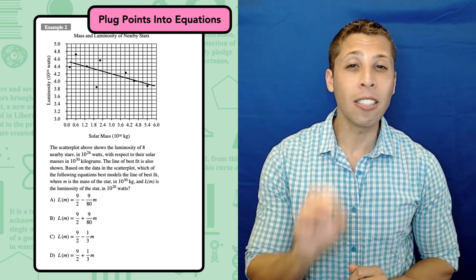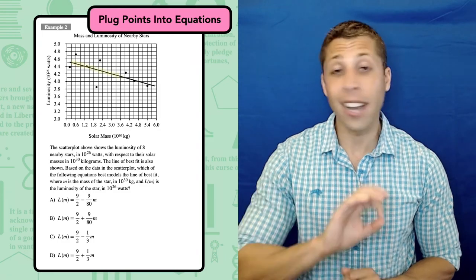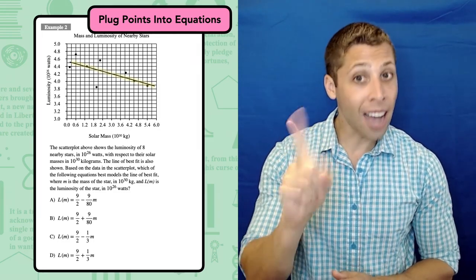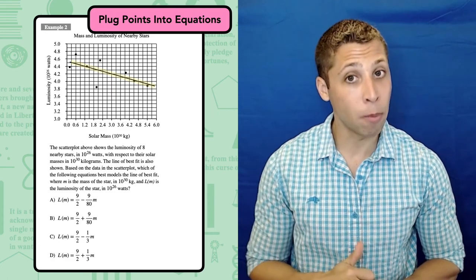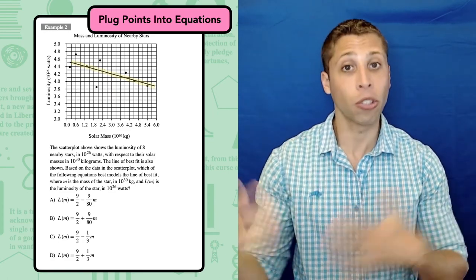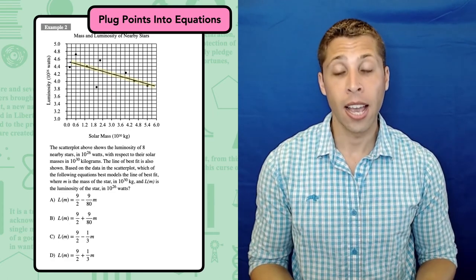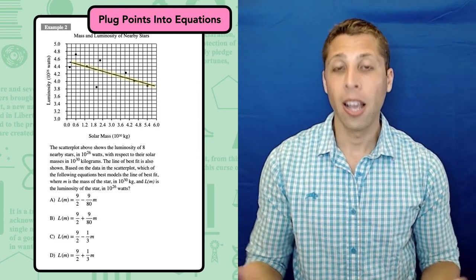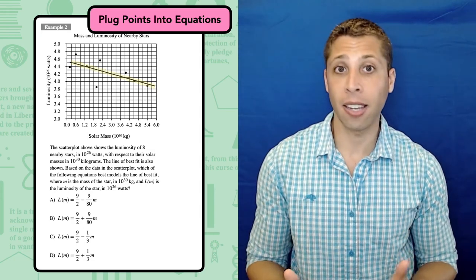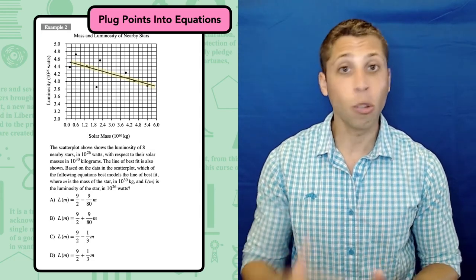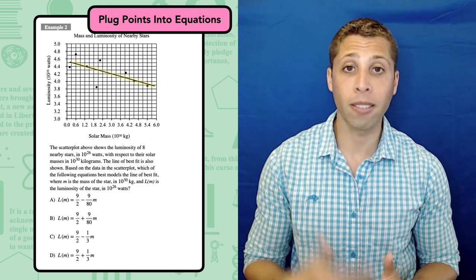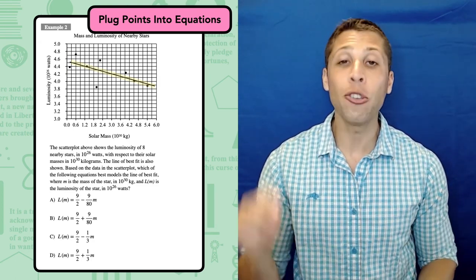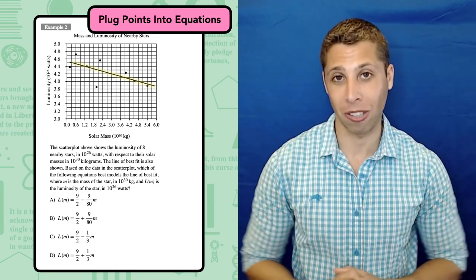Before you try it on your own, though, I want to make it clear that we need to pick points from the line, not the dots. A scatter plot includes two things. The dots, which represent the actual data points, in this case the actual stars included in this study, and the line, which represents a way of connecting the dots to understand a pattern. The question is specifically asking us for the equation of the line, so we can ignore the dots. Pick points that lie on the line, and it doesn't matter if there's a dot nearby. Ignore the dots. And you can use a calculator for this question.